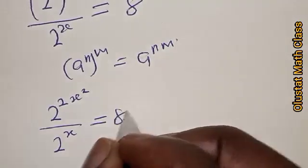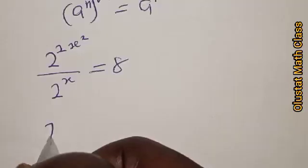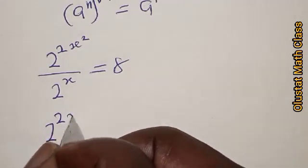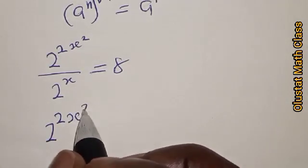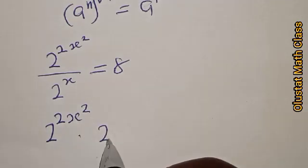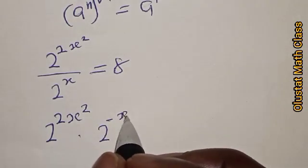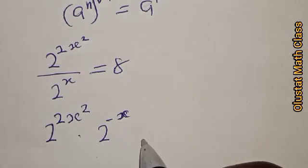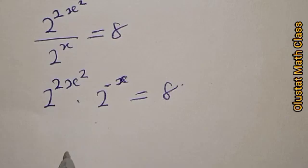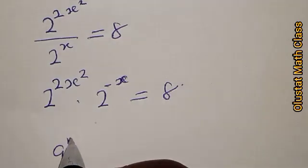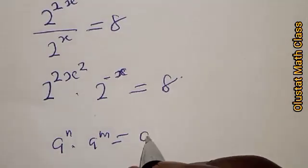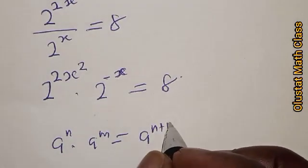Also, remember that if you have 2 raised to power n multiplied by 2 raised to power m, it is equal to 2 raised to power n plus m. So we apply the quotient rule for exponents with the same base.